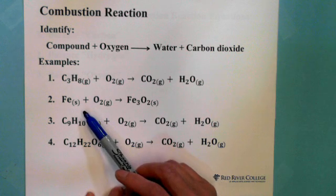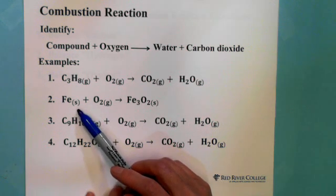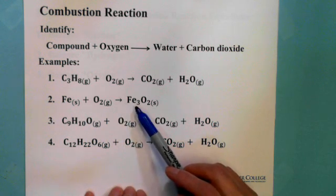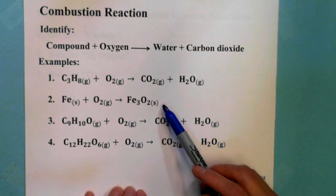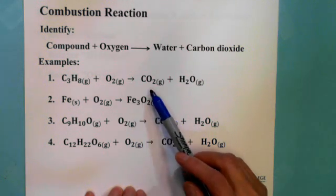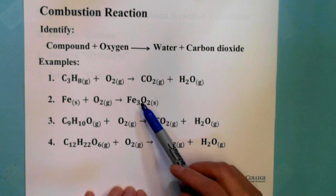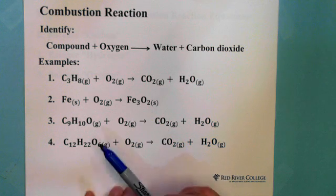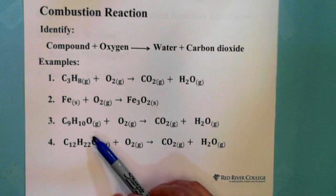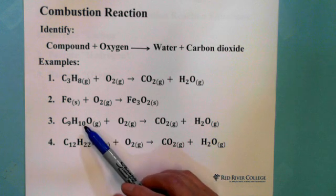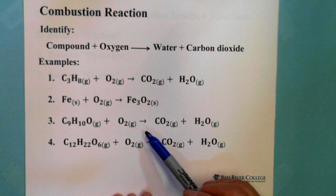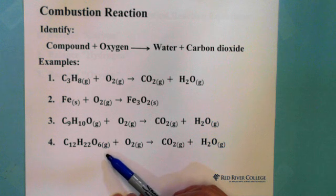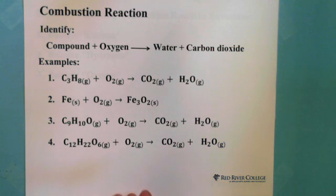The second example is Fe (iron) plus oxygen produces iron 3 oxide. Because the product is not carbon dioxide and water, this is not a combustion reaction. The third and fourth examples react a compound with oxygen and produce carbon dioxide and water, so those are also combustion reactions.